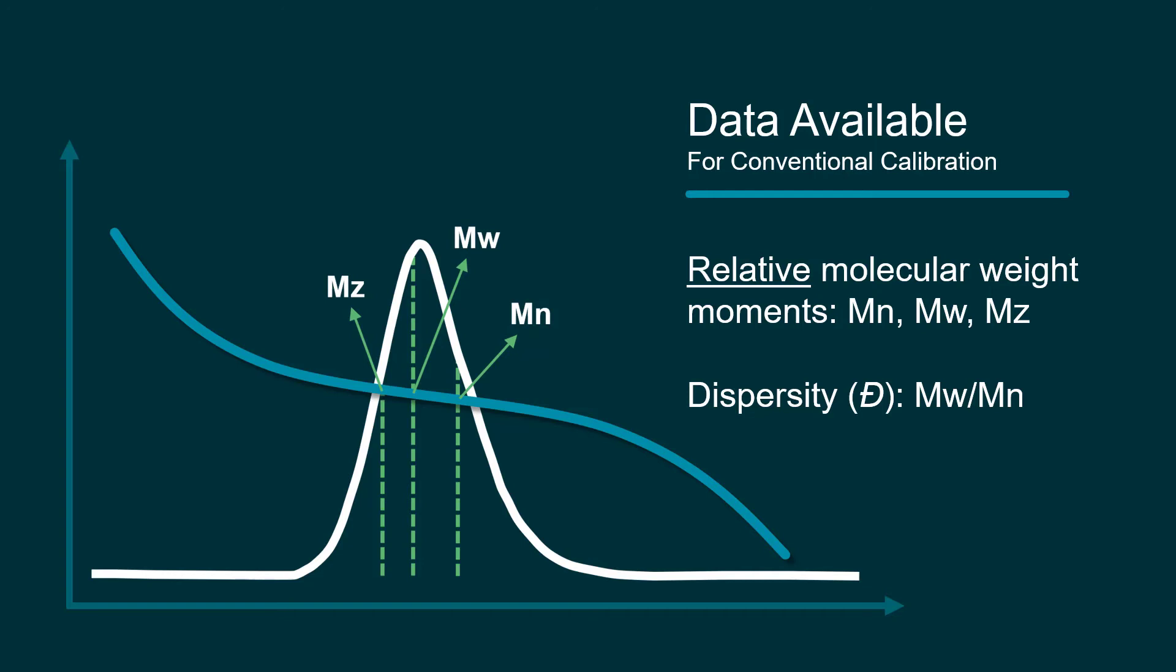When using conventional calibration, you often don't know what you're missing, as you are only observing your sample from the perspective of a single detector.